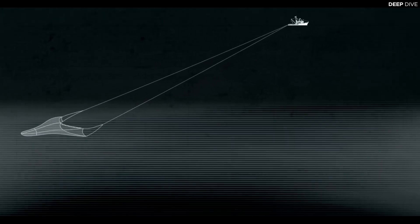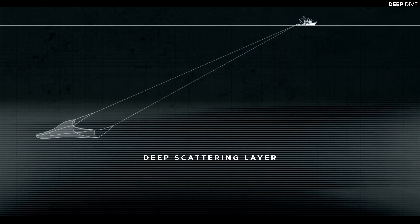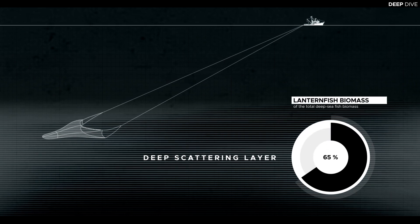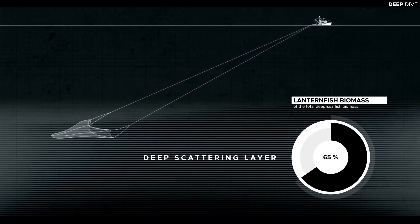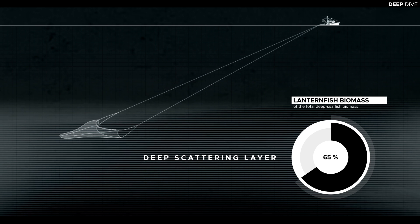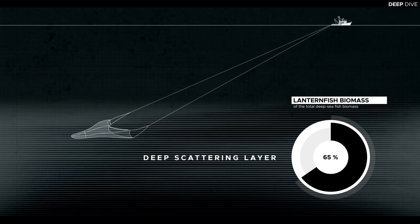Sampling by deep sea trawling indicates that lanternfish have a global distribution and make up as much as 65% of the deep sea fish biomass. How many there are of them exactly is, however, still somewhat of a mystery.